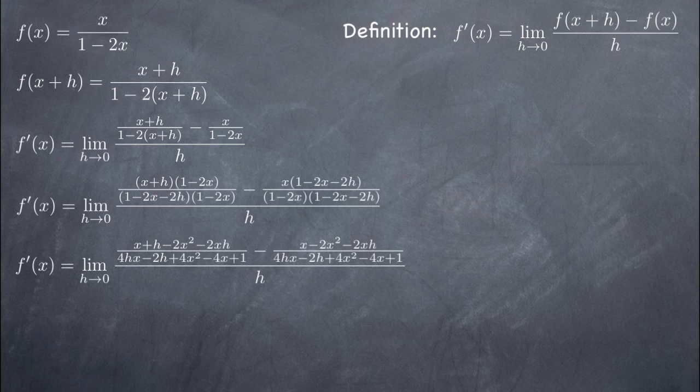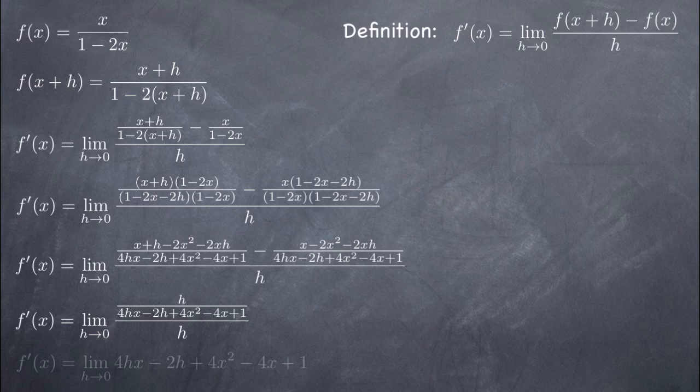In other words, we'll plug in 0 for h and any term involving h will disappear from our derivative function. What we're left with is the derivative of the original function, which we denote as f prime of x.